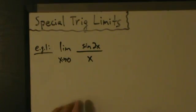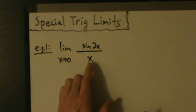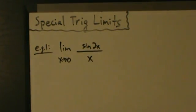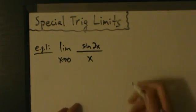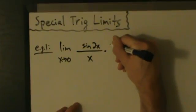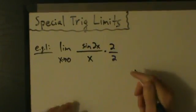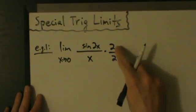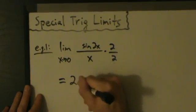The first thing we do is direct substitution, but that gives us 0 over 0. Since this involves special trig limits, we go straight to that approach. We multiply the top and the bottom by 2, and the 2 that goes on top we can pull out of the whole limit.